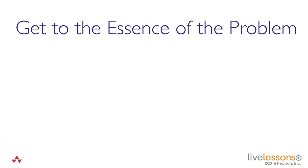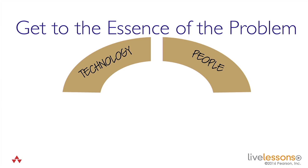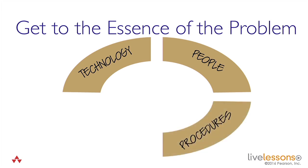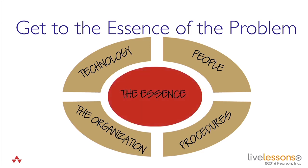Looking at the essence of the problem, it's sometimes hidden. Well, actually, it's always hidden because what you see when you look at something is technology. You also see the people who are involved in this work. You see procedures. All these things are observable. You see the organisation — you can look at an org chart and so forth. What you can't see is the underlying essence, because any piece of work that's being done contains technology, people, procedures, organisation and so forth. But it also contains this core of essential policy.